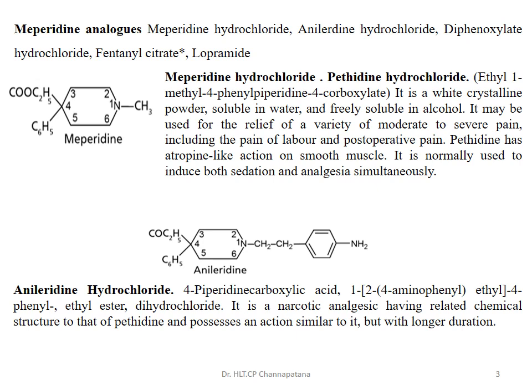The next drug is anileridine hydrochloride, which also contains a piperidine ring. The difference between pethidine and anileridine is only a phenyl-amino group with an ethyl group attached; the rest of the structure is the same. It is 1-(2-(4-aminophenyl)ethyl)-4-phenyl piperidine-4-carboxylate ethyl ester dihydrochloride. It is also a narcotic analgesic with similar structure and action to pethidine, but its analgesic effect is of longer duration.